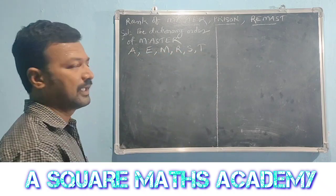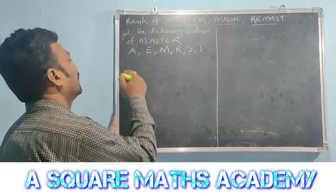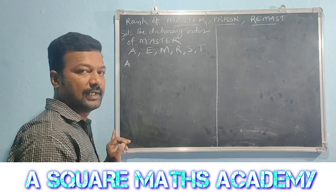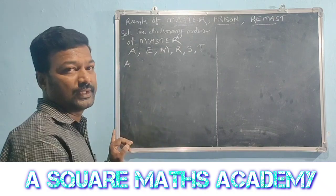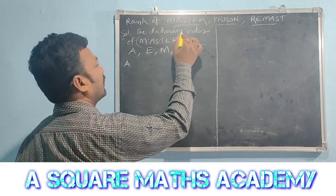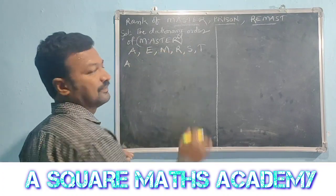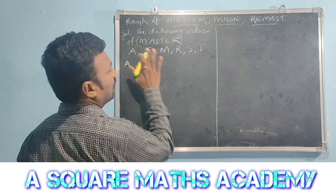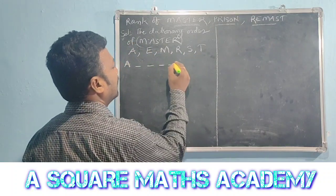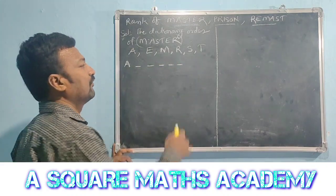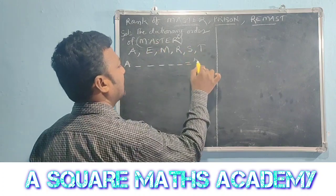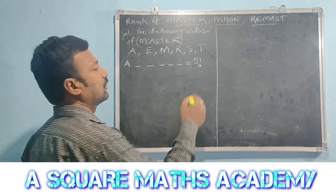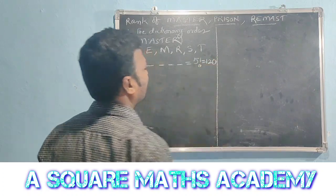In dictionary order, the first letter is A. The words begin with the letter A. We fix A in the first place, then the remaining 5 letters can be arranged in 5 places — 5 factorial equals 120.